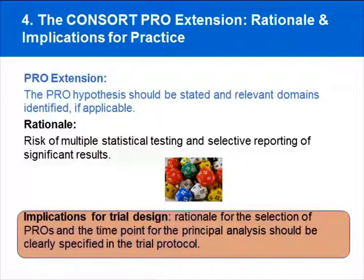The second extension is that the PRO hypothesis should be stated and relevant domains identified if applicable. The reason for this is that we are all aware of doing multiple statistical testing on patient-reported outcome data, given that there are many domains available, many time points of analysis available, and it's easy to fall into the trap of finding a significant result and reporting that result. The pre-specification of a hypothesis, the right domains, and the right timing is important to minimize the negative impact of multiple statistical testing and to make clear that the trial is designed appropriately to address the clinically relevant hypotheses.